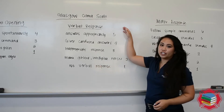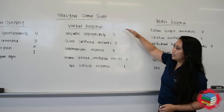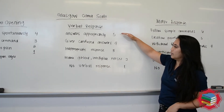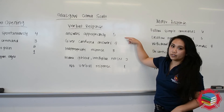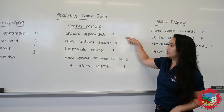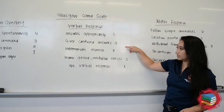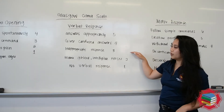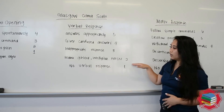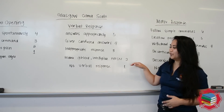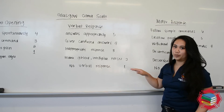After eyes, then you're going to check their verbal response. This one is going to go on a 5, 4, 3, 2, 1 scale. For 5, it's going to be answers appropriately. For 4, the patient gives confused answers. For 3, it's going to be inappropriate responses. For 2, it's going to be garbled unintelligible noises. And then for 1, no verbal response at all.